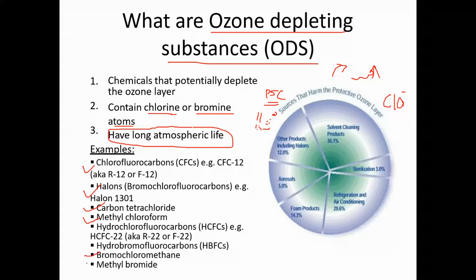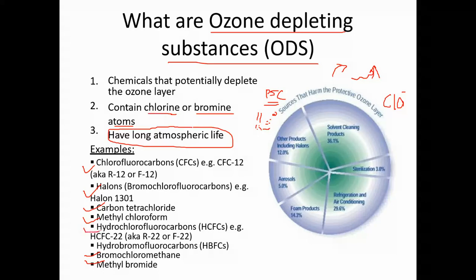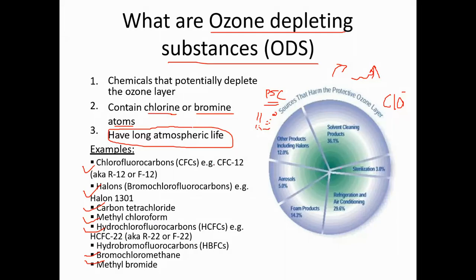The substances which contain chlorine and bromine include: chlorofluorocarbons (CFCs), halons, methyl chloroform, carbon tetrachloride, methyl bromide, bromochloromethane, hydrofluorocarbons (HFCs), and hydrochlorofluorocarbons (HCFCs).